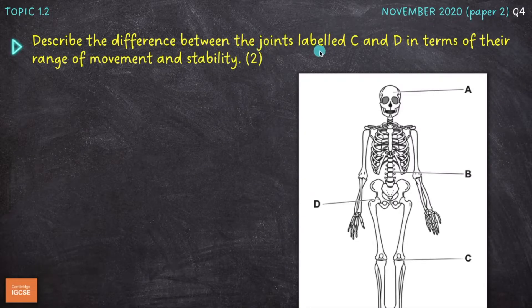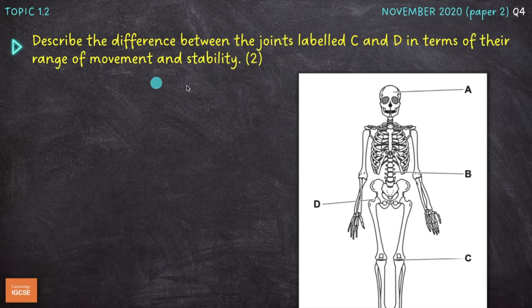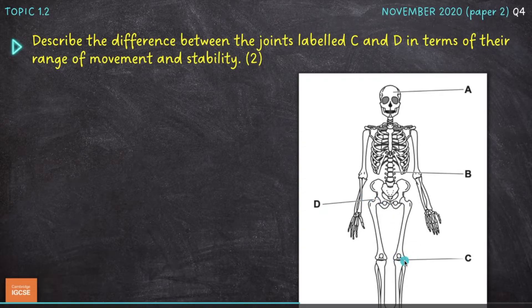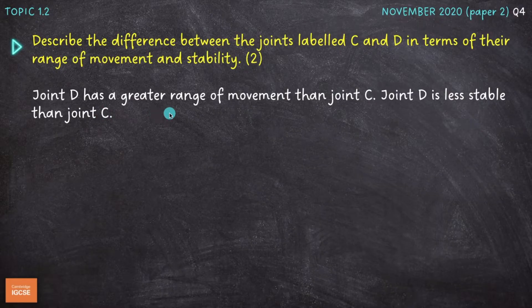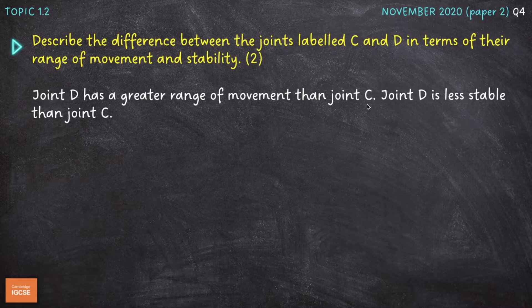Next question, describe the difference between the joints labeled C and D in terms of their range of movement and stability. So one mark for talking about the difference between the range of movement of those two joints and then the other mark for the difference in stability. So between D, which is a ball and socket joint at the hip, and C, the hinge joint at the knee. So we'll start off by looking at the range of movement. And I've talked about or I've stated that joint D has a greater range of movement than joint C. So ball and socket joints are capable of abduction, adduction, rotation, circumduction, flexion and extension. Whereas hinge joints, joint C there, the knee joint, are only capable of extension and flexion.